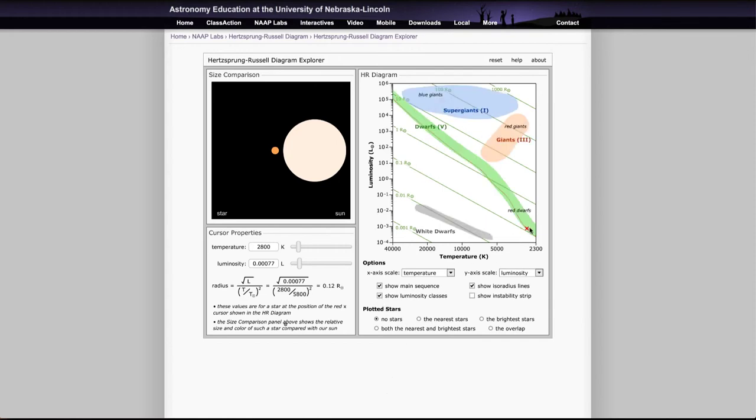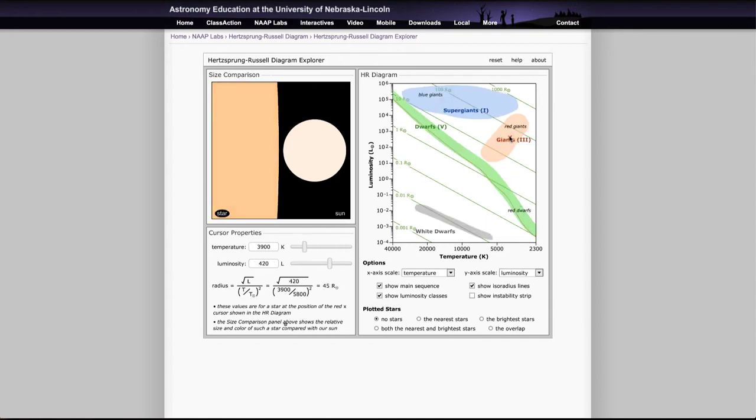If we put our luminosity classes back on, you can then drag that cursor. What is a giant star like? Well, 40 or 50 times the size of the Sun. And a supergiant star, as you go up into the upper corner here, can be thousands of times the diameter of the Sun. So temperature gets very cool but luminosity gets tremendous because these stars are very large.